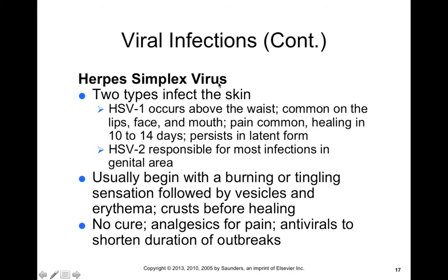Herpes simplex virus has two subtypes: HSV-1 and HSV-2. HSV-1 typically occurs in skin above the waist — commonly the lips, face, mouth, and areas of mucous membrane. Pain is common and healing occurs within about two weeks; however, pain can persist even in viral latency or dormancy. You can't eliminate this virus once you're infected because herpes simplex goes dormant within the ganglia of your cranium and spinal cord. HSV-2 is responsible for most infections below the waist — the genital area — so it's considered more sexually transmitted. However, these can be vice versa: you can have HSV-2 infection of the oral mucosa or HSV-1 infection of the genital mucosa.